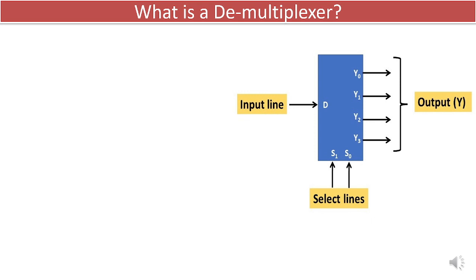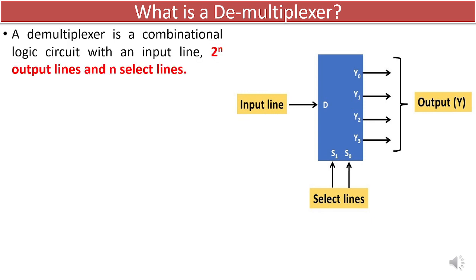A D-multiplexer is a type of combinational logic circuit that features a single input line, 2 to the power of n output lines, and n select lines.